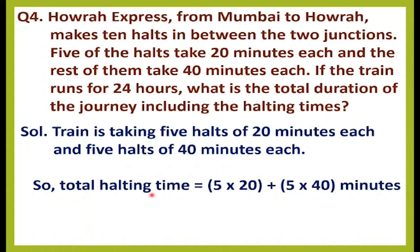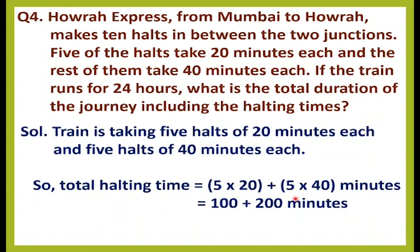To calculate total halting time, we multiply 5 × 20 and 5 × 40 and add them together. 5 × 20 = 100 and 5 × 40 = 200. So 100 plus 200 equals 300 minutes. Total halting time is 300 minutes.